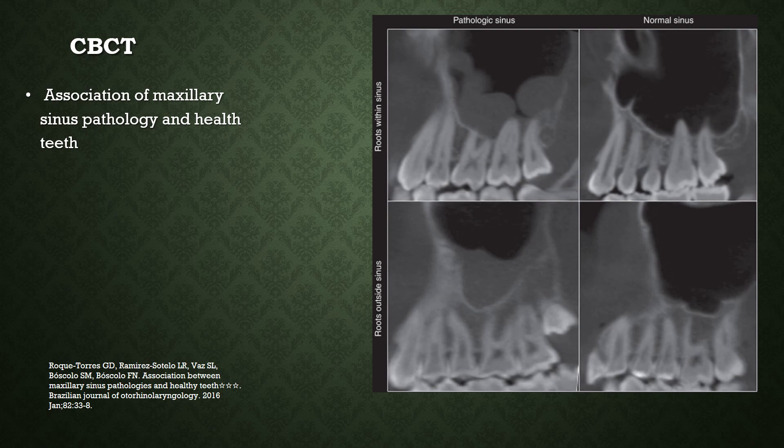CBCT scans can be used to visualize sinus pathology. This image shows the association of maxillary sinus pathology and teeth. On the right, roots are within the maxillary sinus and there is pathology in the sinus. Below, roots are outside the sinus yet pathology is still present. On the other hand, a normal sinus floor can show roots appearing very close to it. The relationship depends on the size of the sinus, pneumatization, and whether pathology is present.